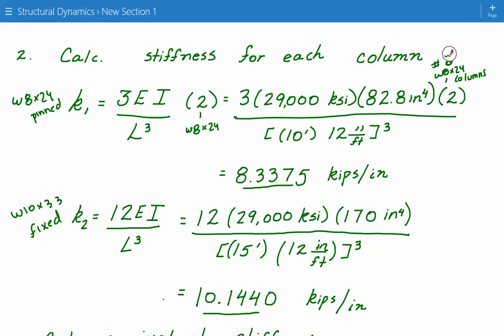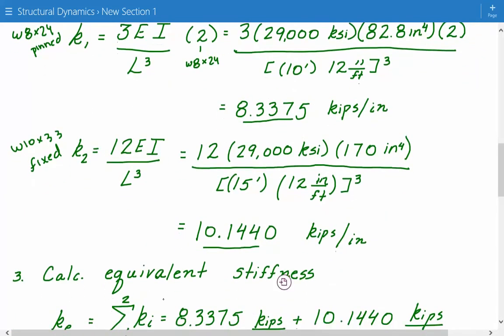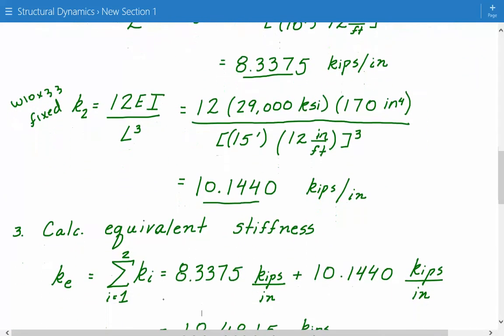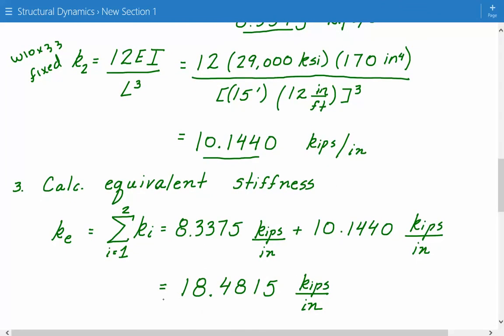So once we have the individual stiffnesses, we need to calculate the equivalent stiffness. So these three columns represent springs in parallel. So to calculate the equivalent stiffness, we simply just do the summation. We just add the individual stiffnesses up.